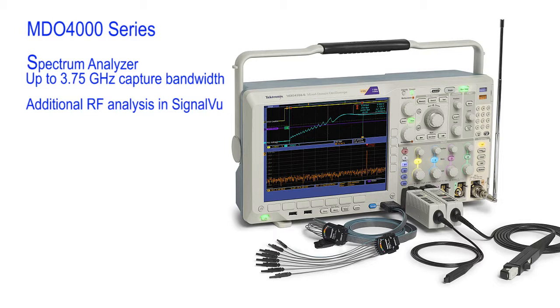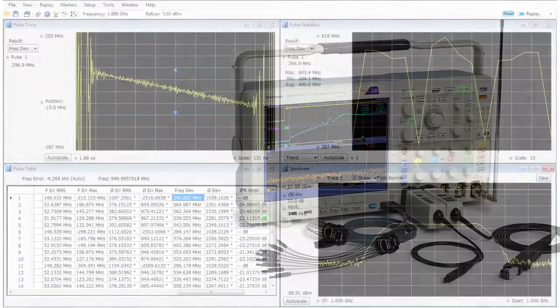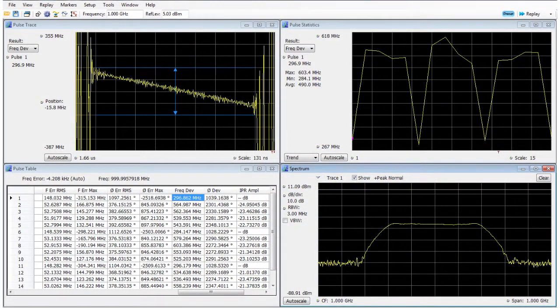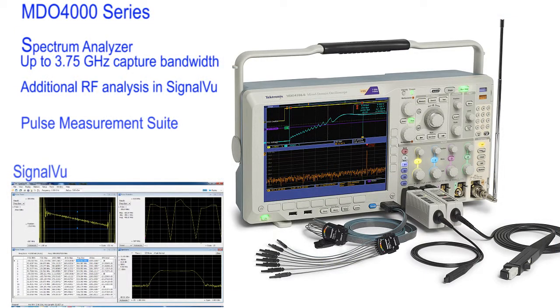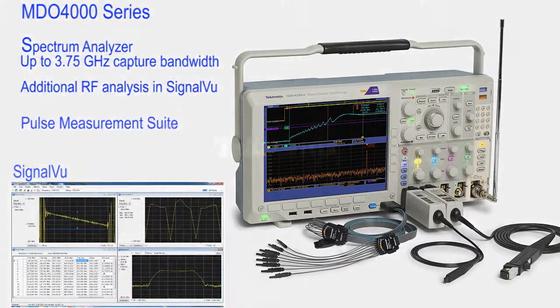When additional RF measurements are required, the MDO can save the underlying IQ signal data and load this into SignalView. SignalView includes a pulse measurement suite, which can automatically characterize 27 different vector and scalar signal parameters. These measurements can be used to specifically characterize individual attributes of a given radar.